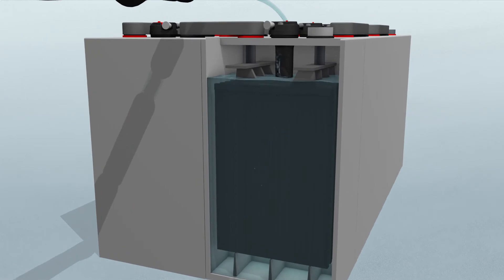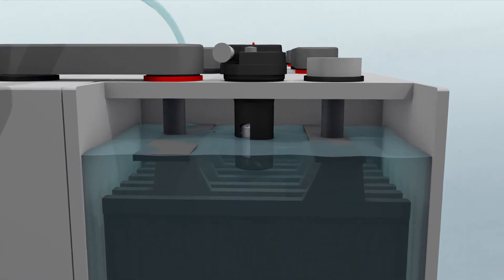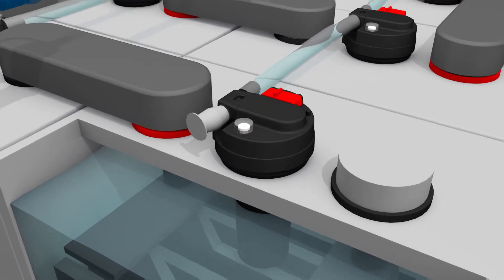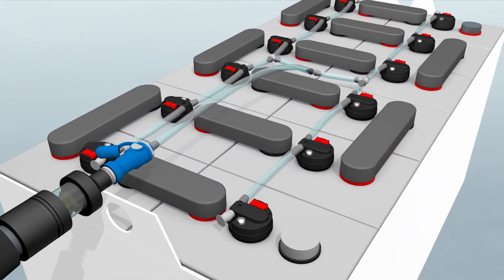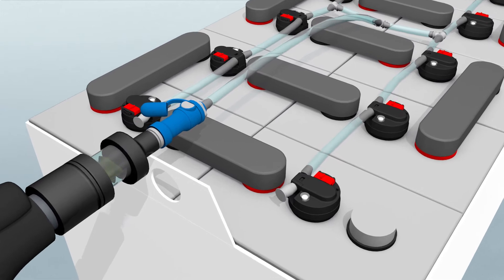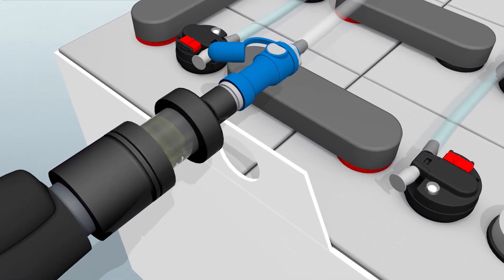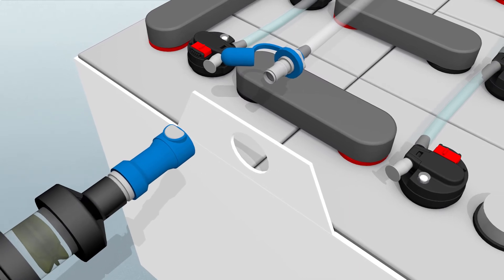As they reach the ideal level, the water raises the encapsulated floats and pops the indicator eyes into place. You can see those things from a mile away. When all the cells are full, the water automatically stops flowing. Now just unplug and move on to the next battery.